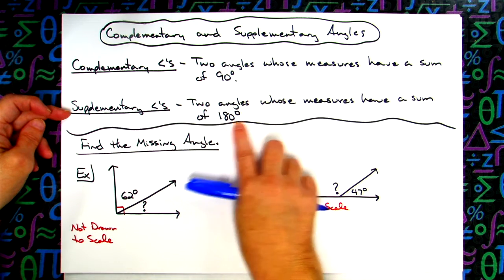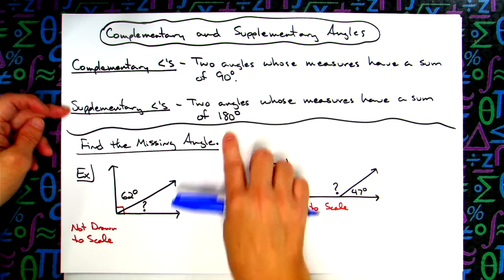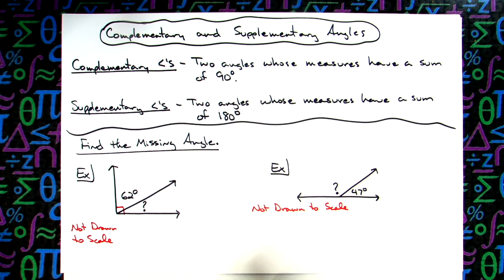Complementary angles are two angles whose measures have a sum of 90 degrees. Supplementary angles are two angles whose measures have a sum of 180 degrees.